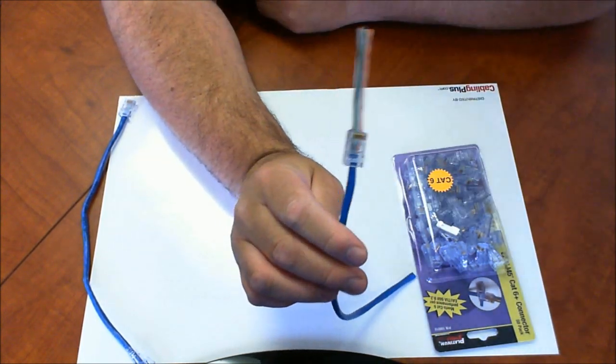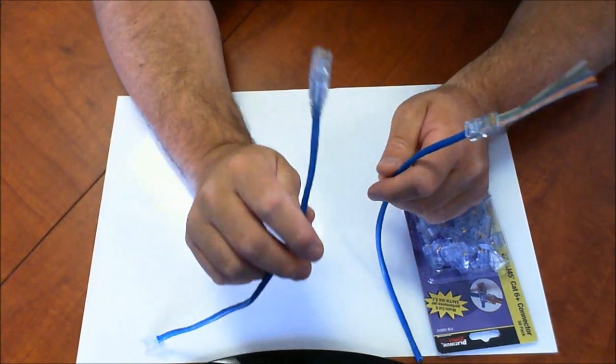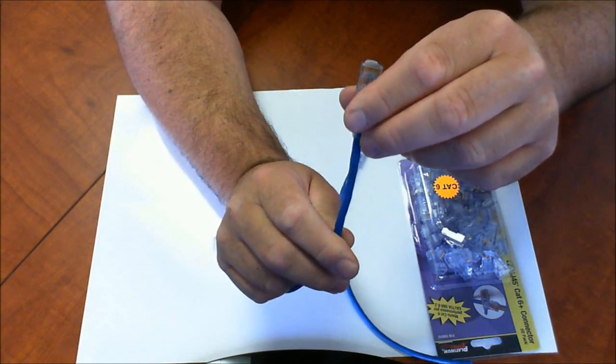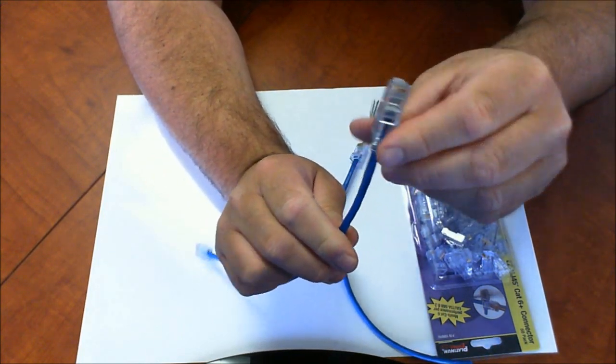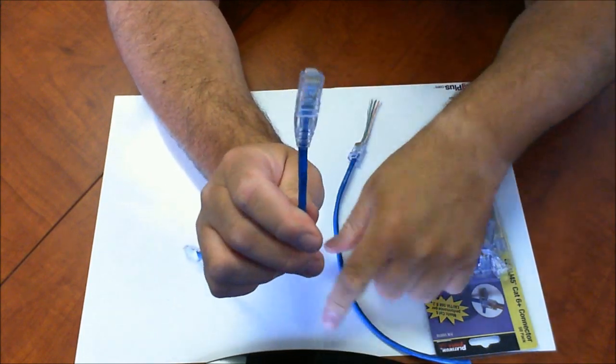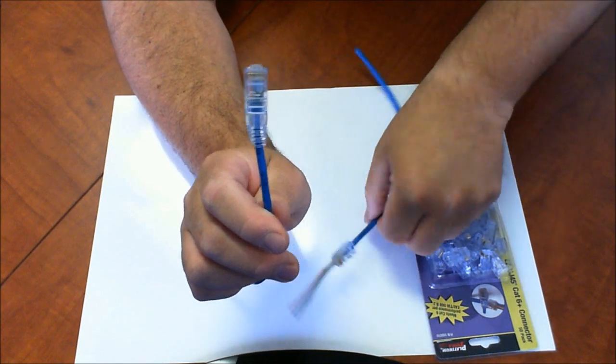They also have an option for strain relief. The strain relief gives you some relief, makes the cable stronger, and protects your terminations from dust and moisture. That's what it looks like with the strain relief, and this is without.